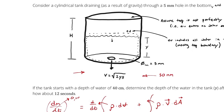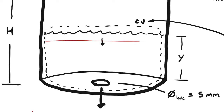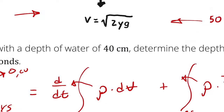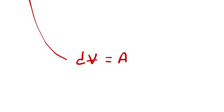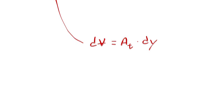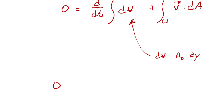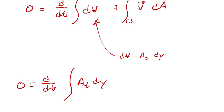I'll describe dy as the infinitesimal step down. Then d-Volume equals the cross-sectional area times dy, so dV = A_tank × dy. Substituting in, I have: 0 equals d/dt of the integral of A_t dy plus the integral across the control surface of the velocity vector with respect to area.